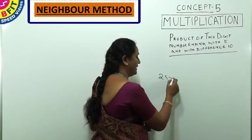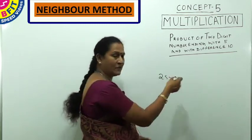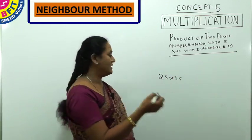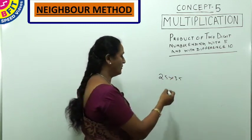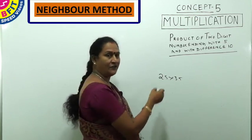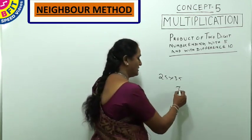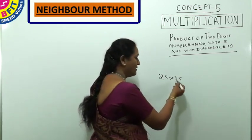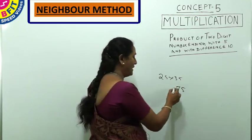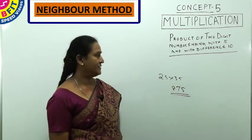For any difference, we can follow this general pattern. But when the difference is 10, the earlier shortcut is much handier. For example, with difference 10 and ending with 5: last two digits are 75, higher digit is 3, 3² = 9, minus 1 = 8. So the answer is 875.